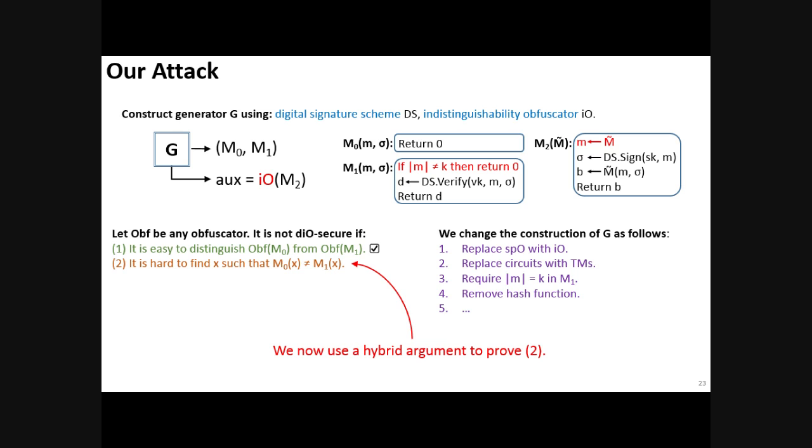Similar to GGHW, in our case, it is still trivial to distinguish an obfuscation of M0 from obfuscation of M1. However, now, the challenging part is proving that it is hard to find an input in which these Turing machines are different.